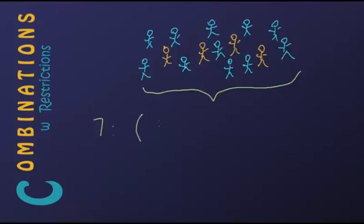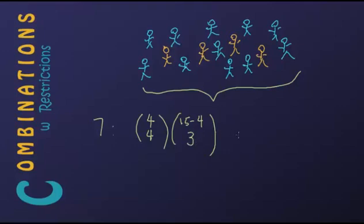So how many ways are there of choosing four brothers from among four brothers? That's C(4,4), which equals one. How many ways can we choose three other people to be in this group of seven? We started with fifteen, and since we've chosen four people, there are now fifteen minus four — eleven people left — and we wish to choose three people.